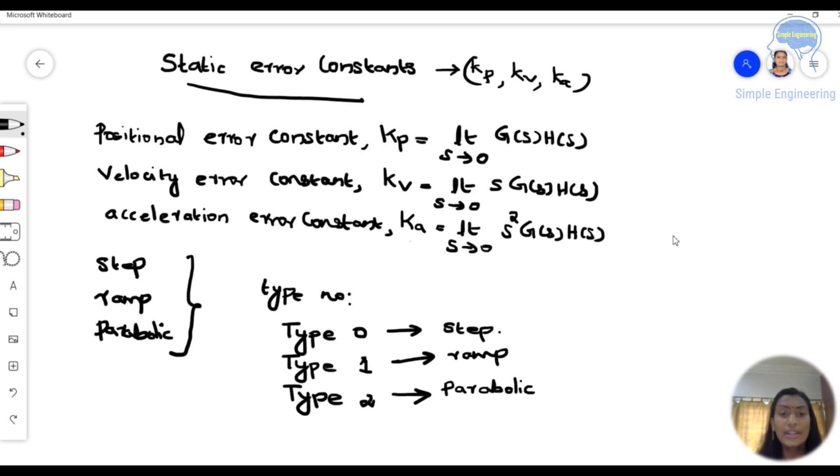So according to these equations Kp, Kv and Ka we can find the static error constant. So these Kp, Kv, Ka—that is positional error constant, velocity error constant and acceleration error constant—is together known as static error constant.